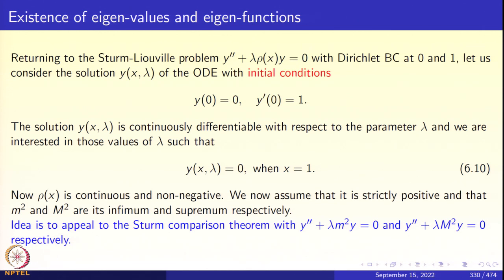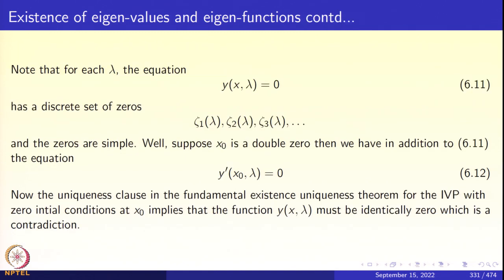How are we going to apply Sturm's comparison theorem? We have three differential equations: y'' + λm²y = 0, y'' + λM²y = 0, and y'' + λρ(x)y = 0. Since ρ(x) is sandwiched between m² and M², we can apply Sturm's comparison theorem. For each λ, the equation y(x, λ) = 0 has a discrete set of zeros, and the zeros are simple — also proved using the uniqueness clause in Picard's theorem.